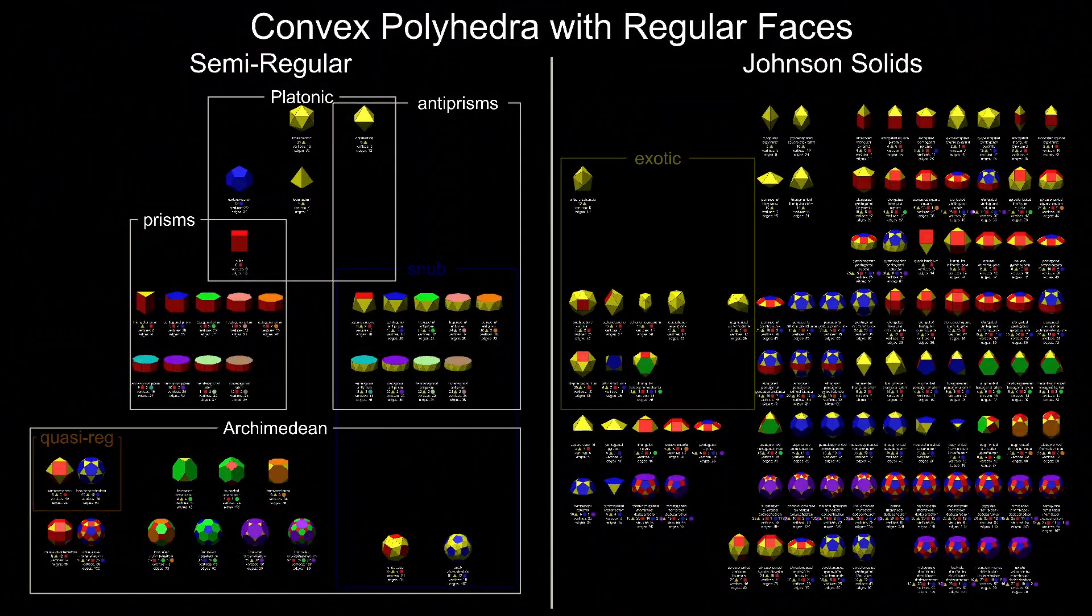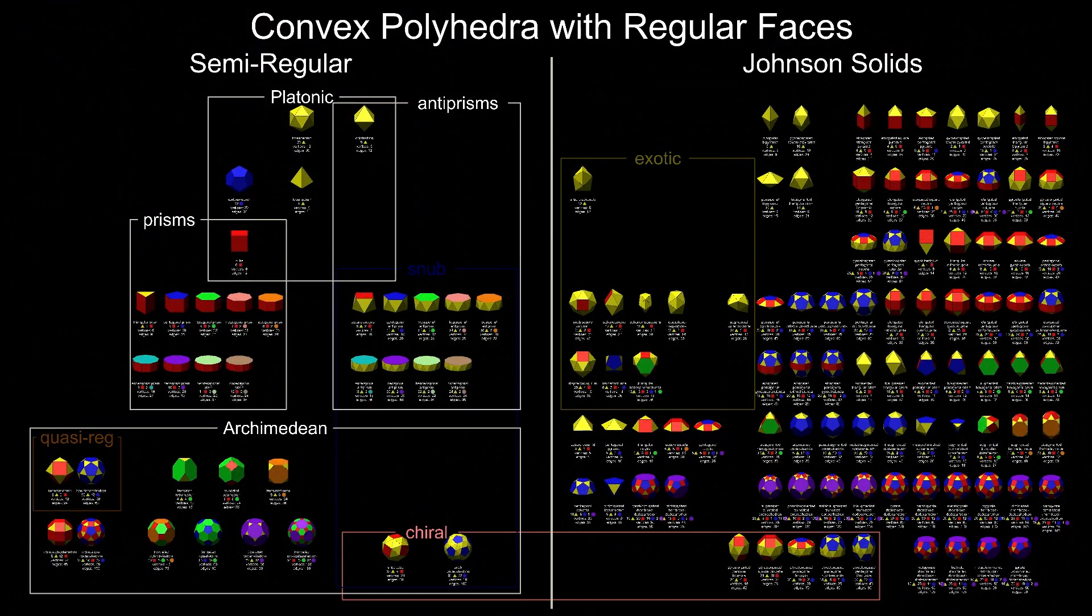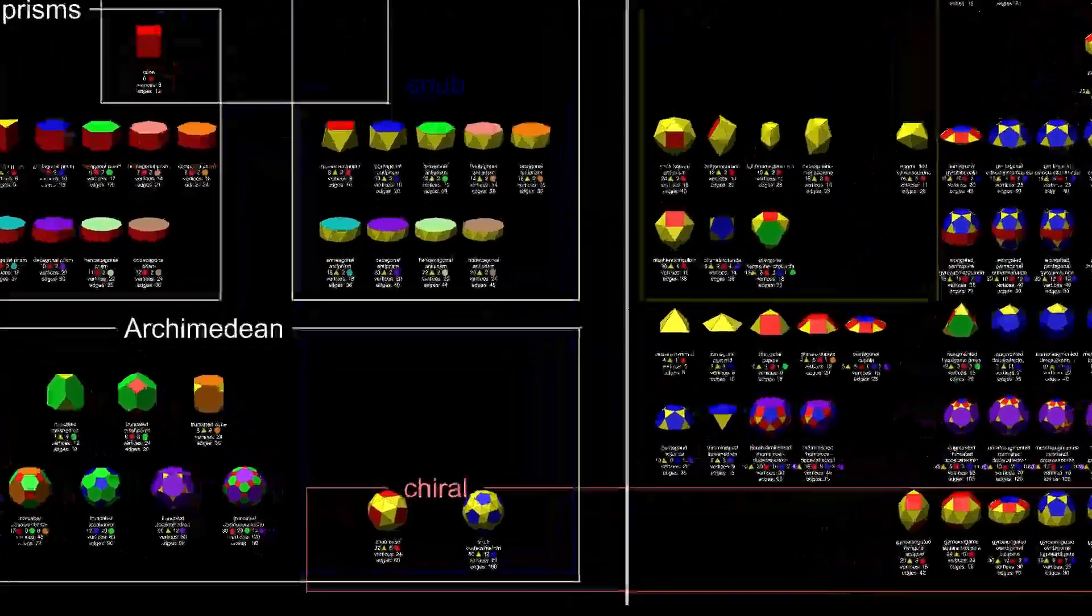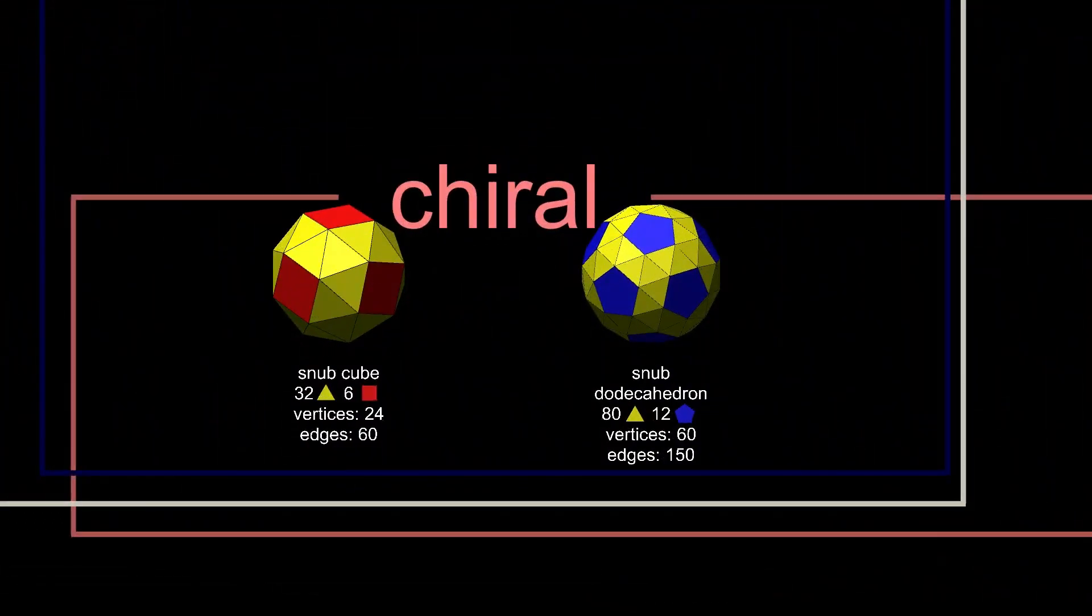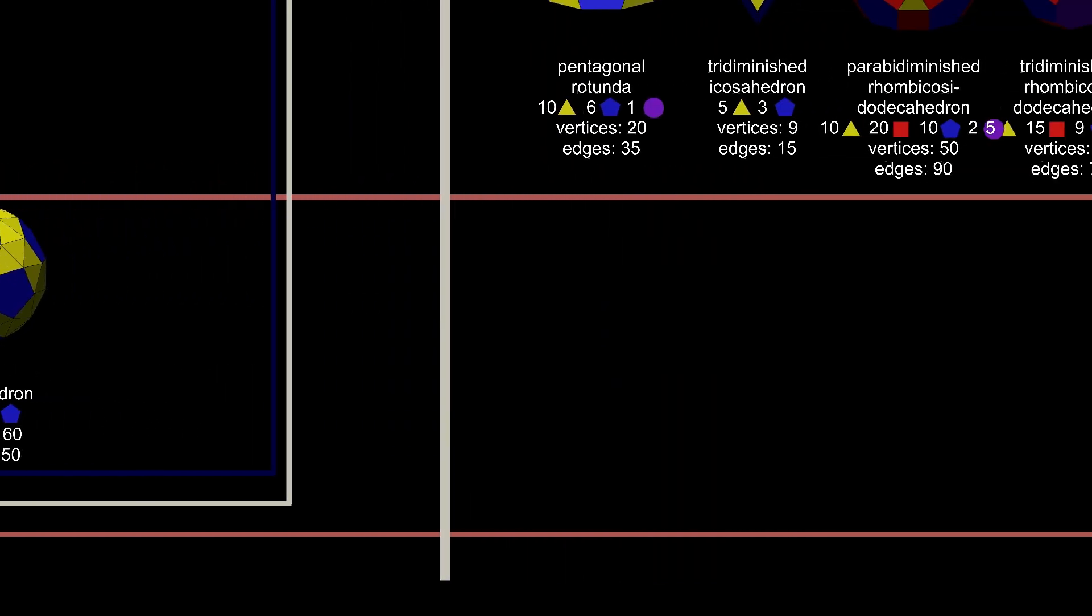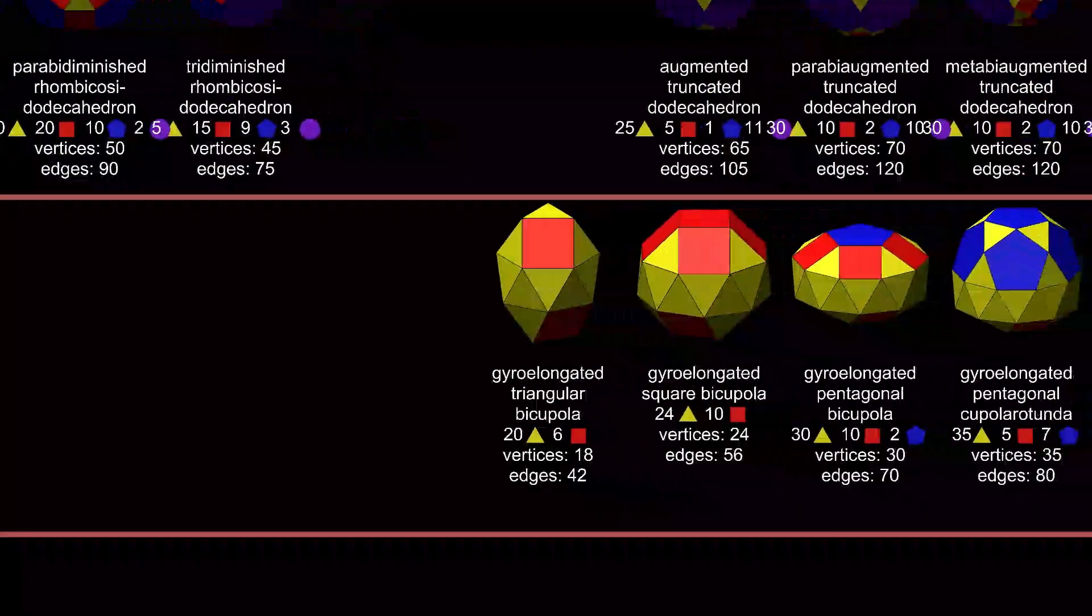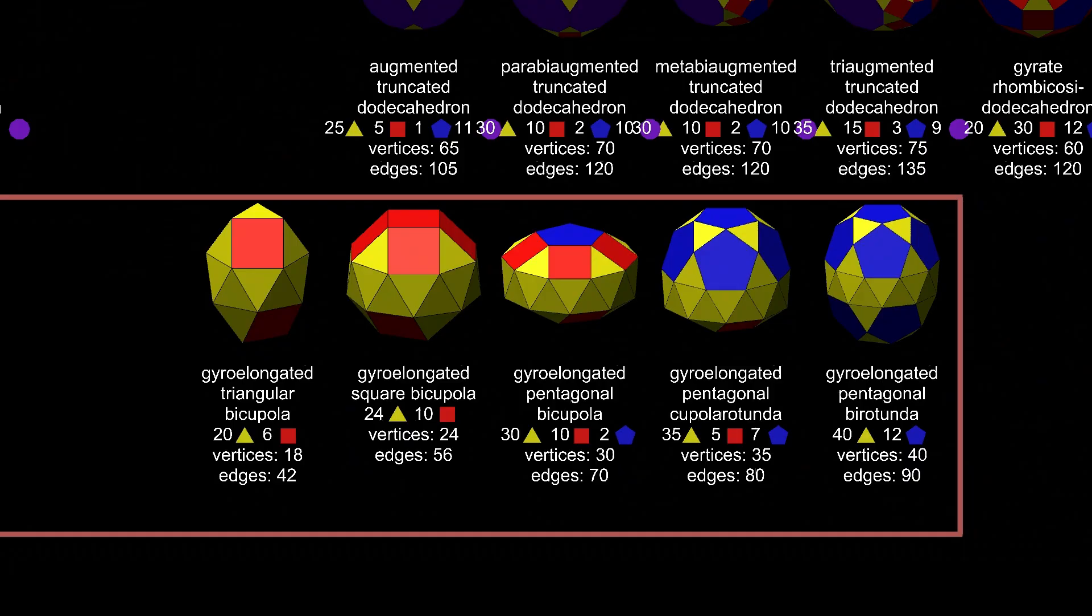There are a few categories that span both sides of the chart. Chiral polyhedra are those without mirror symmetry. Along with the two Archimedean snub polyhedra, there are five chiral Johnson solids. Each of these seven has left-handed and right-handed versions.